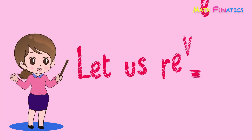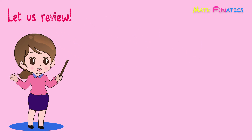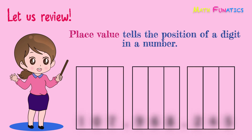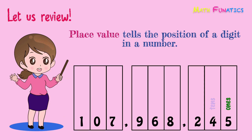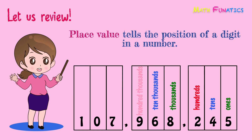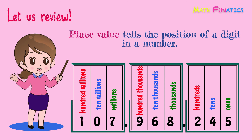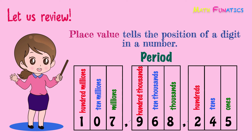Now let's make a recap of what we've learned today. Place value tells the position of a digit in a number. We start with the ones, tens, hundreds, thousands, ten-thousands, hundred-thousands, millions, ten-millions, and hundred-millions. The digits are grouped into threes, and each group of three digits is called a period. A space or a comma is used to separate periods.